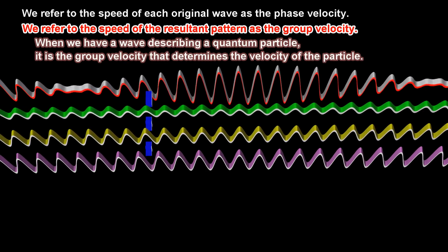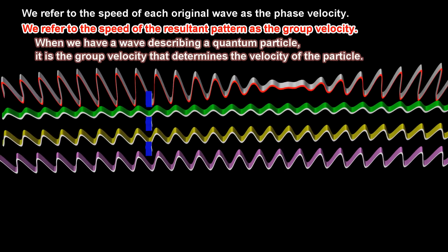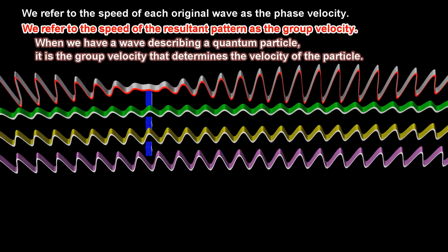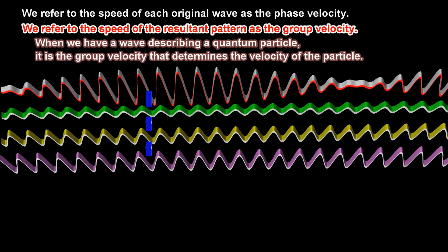When we have a wave describing a quantum particle, it is the group velocity that determines the velocity of the particle.